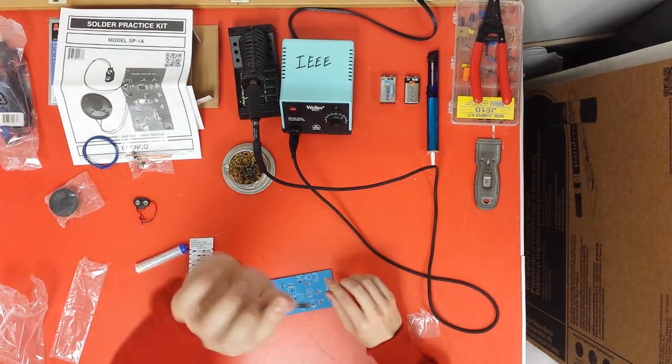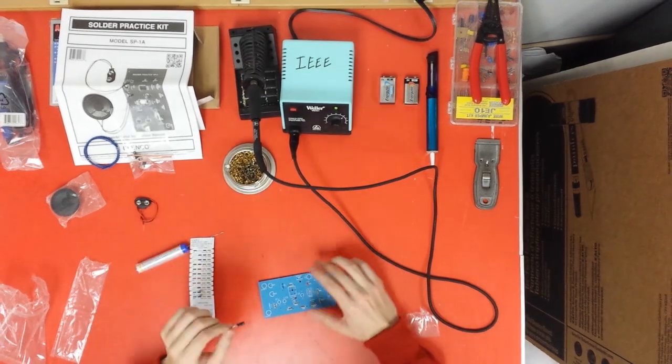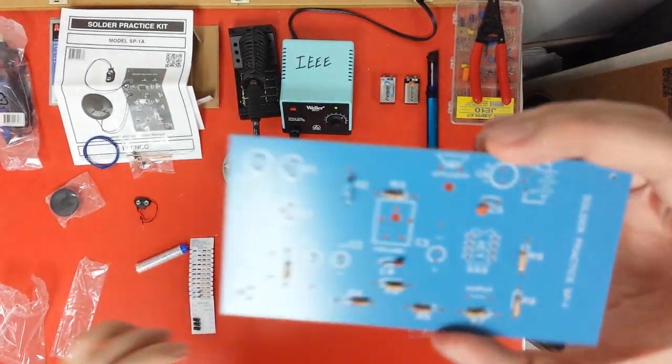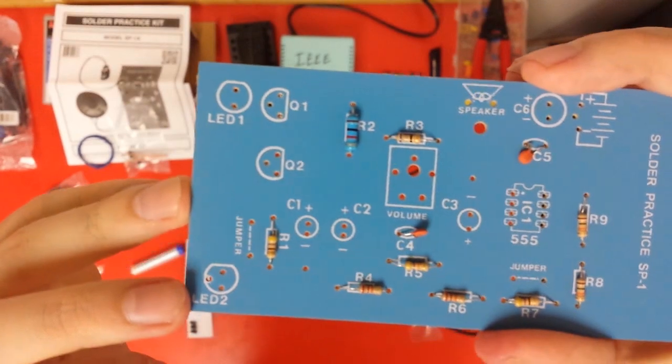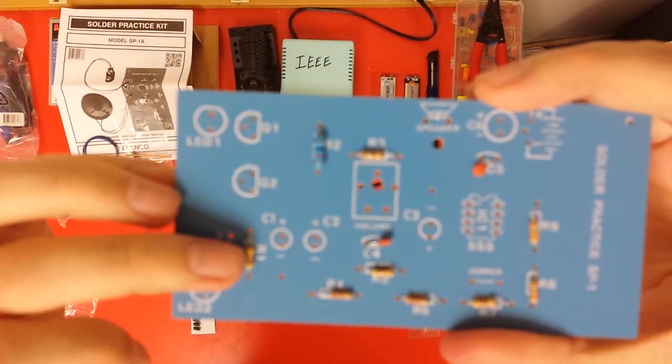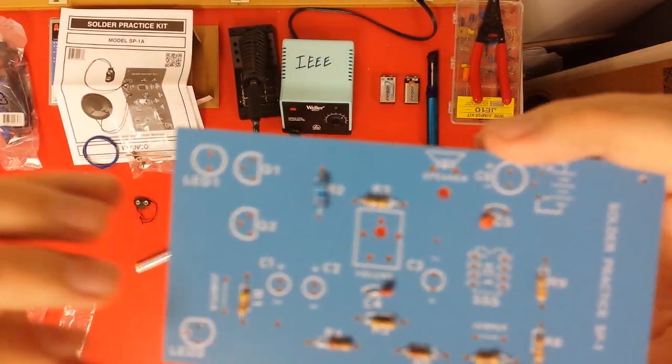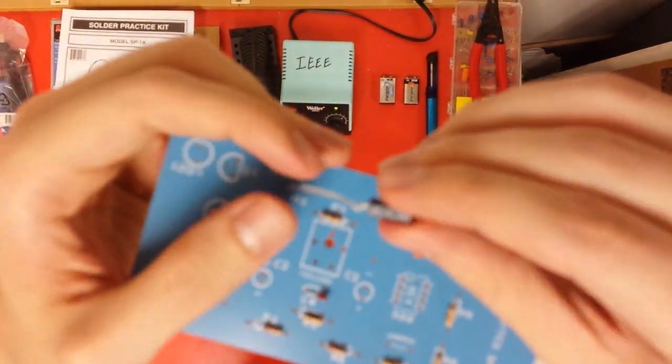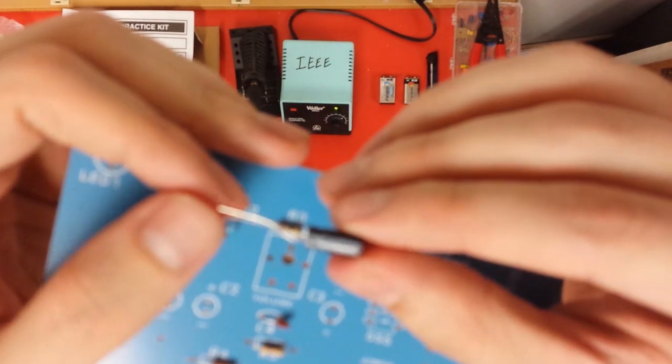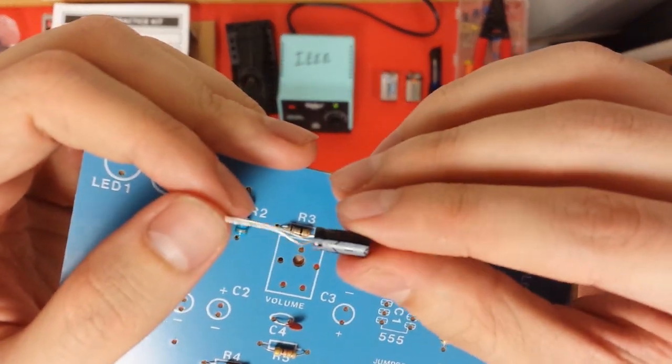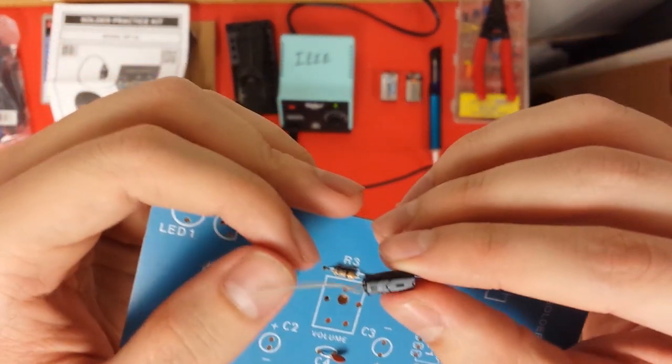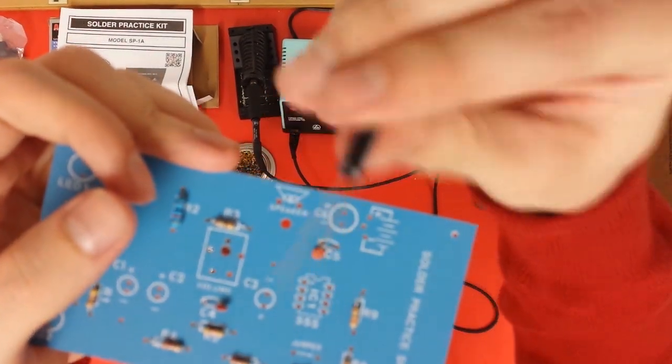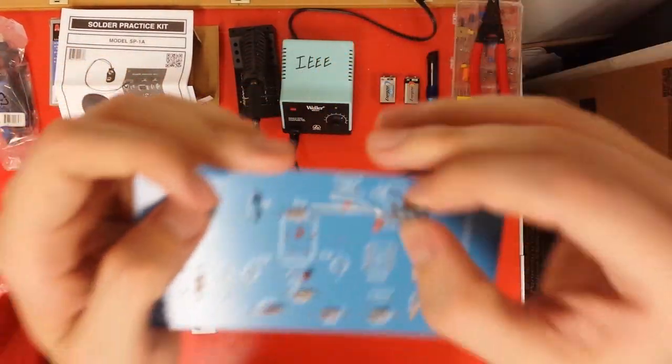Alright, now these things are called polarized capacitors. These you've got to be careful with. So if you look at your board, there's some things labeled C1, C2 plus and minus. Now, the negative side you have to match with the negative side of this capacitor here. So the negative side will be marked with a little gray dash on the side of the capacitor. It also has a shorter leg. When you look at it, the negative side has a shorter leg and the gray dash.